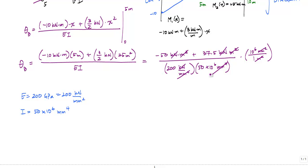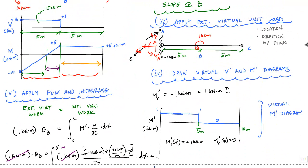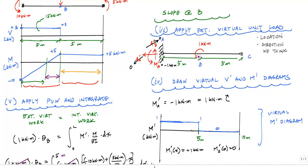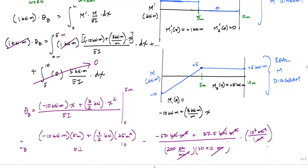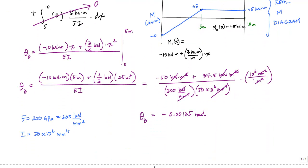That's going to tell me that θ_B is equal to, when I work all this out, negative 0.00125 radians. And this negative, what this negative means is that the virtual unit load we had assumed it to be counterclockwise, and the negative just means that point B is rotating the other way. So in reality, this is 0.00125 radians clockwise. This would be our answer for the rotation at point B.